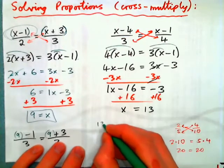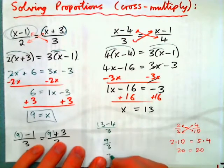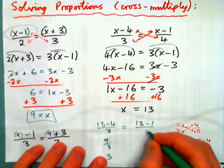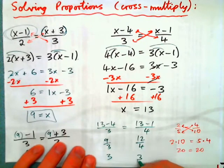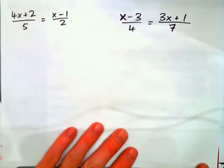Now if you checked it, that's 13 minus 4 over 3 is 9 over 3, which is 3. And on the right hand side we have 13 minus 1 over 4. That's 12 over 4, which gives 3. So, we have 3 on both sides.